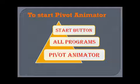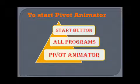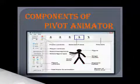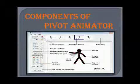You can observe that the Pivot Animator window appears. The Pivot Animator window has different parts, which are also known as its components. Now we will discuss its components one by one. First is the Frame — it shows the position of a figure. Next is Frame Controls — this group has various buttons to control the working of the frames.